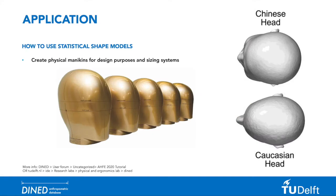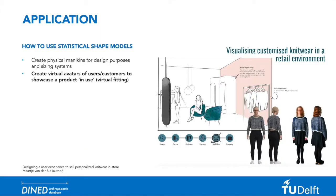Once you have your statistical shape model, you can use it for different applications. For example, you can use the data to improve physical mannequins. An example is a study by Roger Ball and Johan Molenbroek at Delft University of Technology, who found that the standard helmet sizes are not suitable for Asian heads and proposed a new head shape standard for this different target group. It is also possible to use the statistical shape model to create a virtual avatar of a user or a customer.